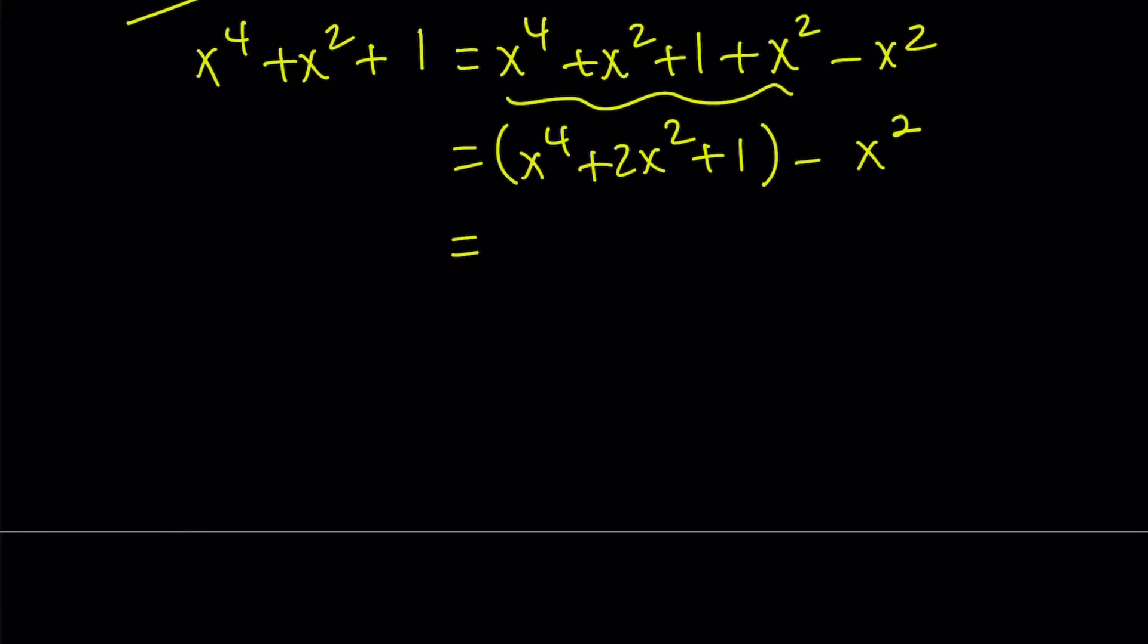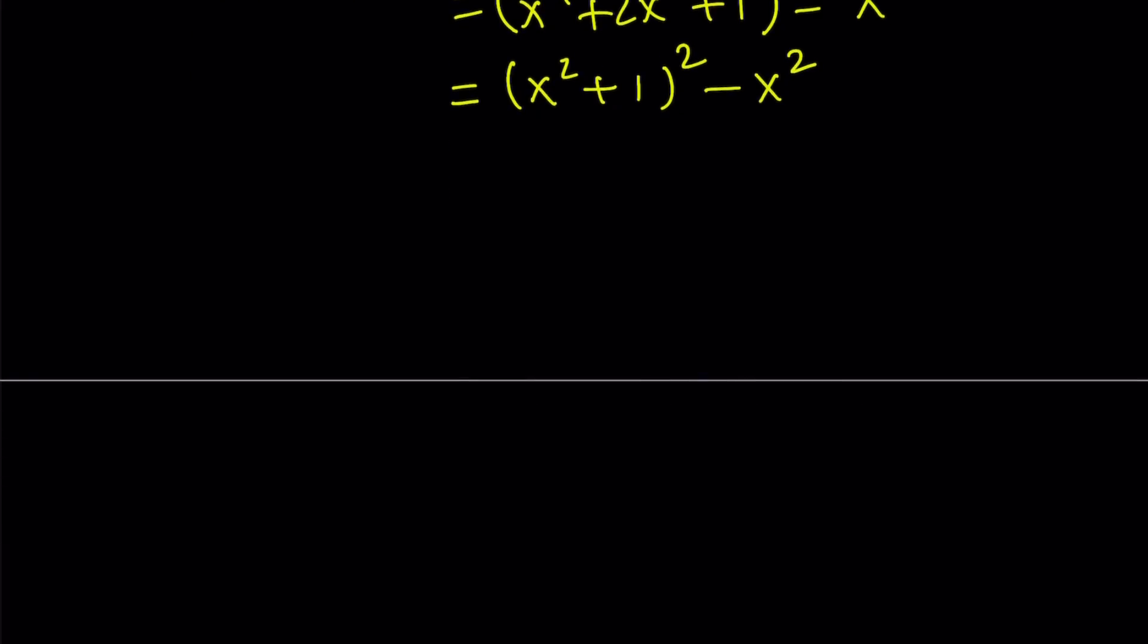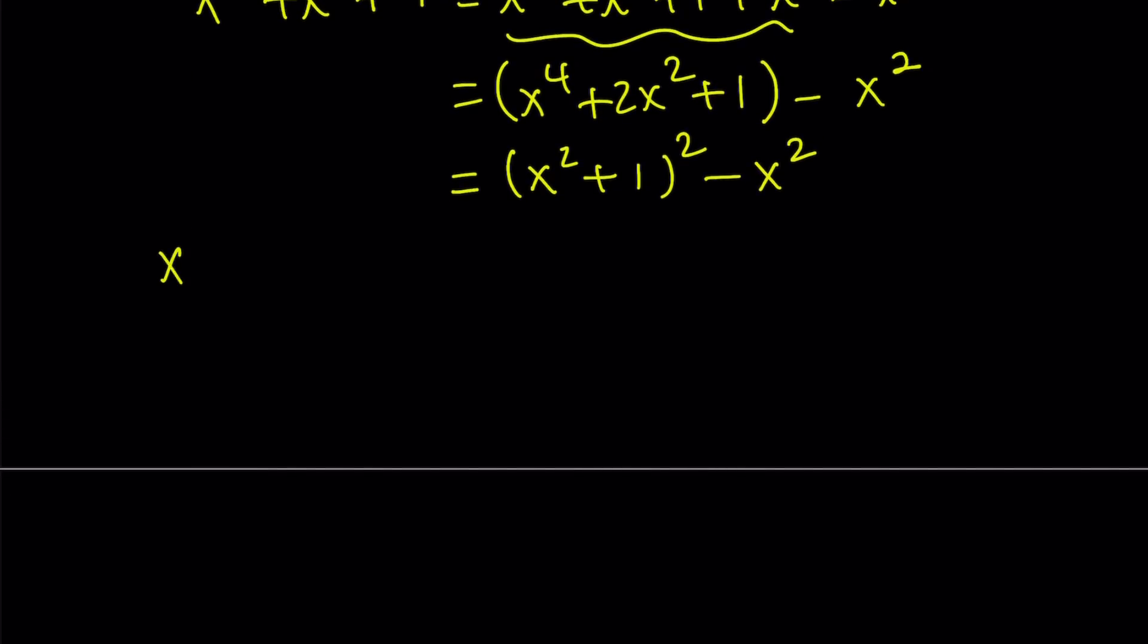Now, how do you write the first expression? That is x squared plus 1 quantity squared. And this is, of course, x squared. Now, since this expression can be written as a difference of two squares, it is factorable. Let's go ahead and write it in the factored form.